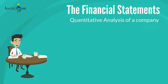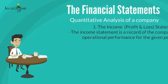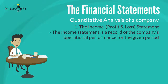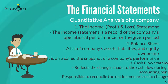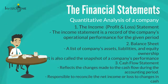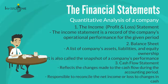The financial statements are the quantitative analysis of a company — they give us a picture of the current financial health. The financial statements are broken down into three different sections: the income statement (also called the profit and loss statement), the balance sheet (a list of a company's assets, liabilities, and equity ownership), and the cash flow statement (which reflects changes made to cash flow during the accounting period and reconciles net income or loss to changes in cash). Publicly traded companies must produce financial statements quarterly and file them with the Securities and Exchange Commission. We will discuss the components of the three financial sheets one by one.